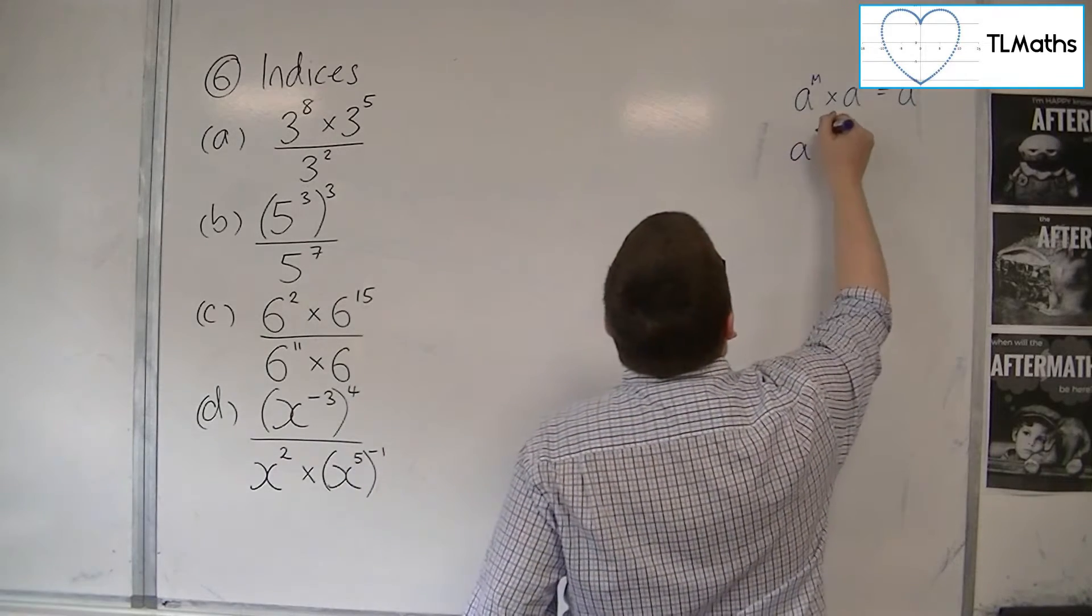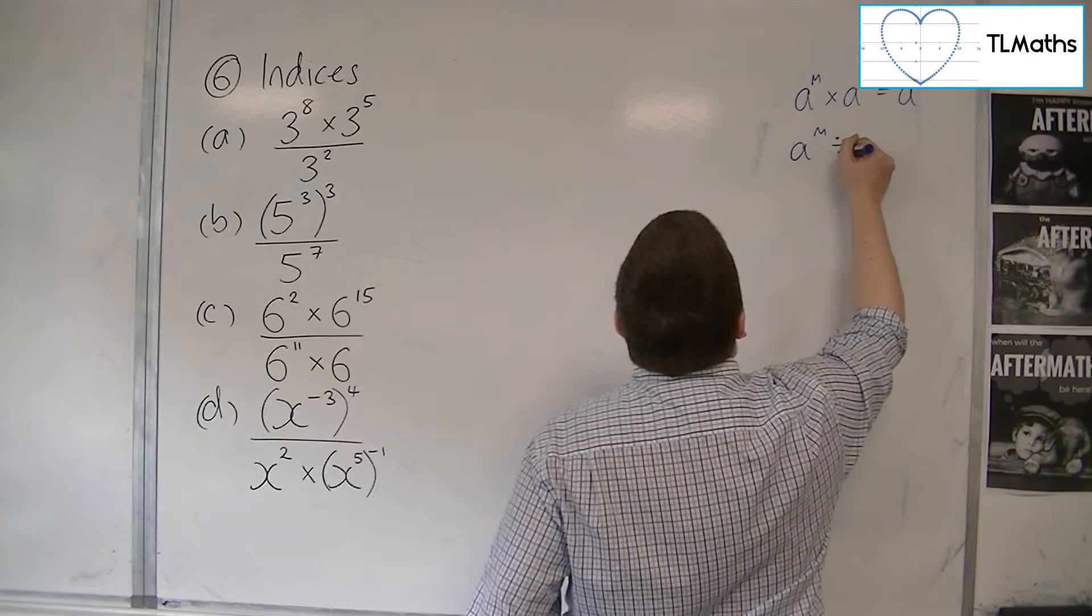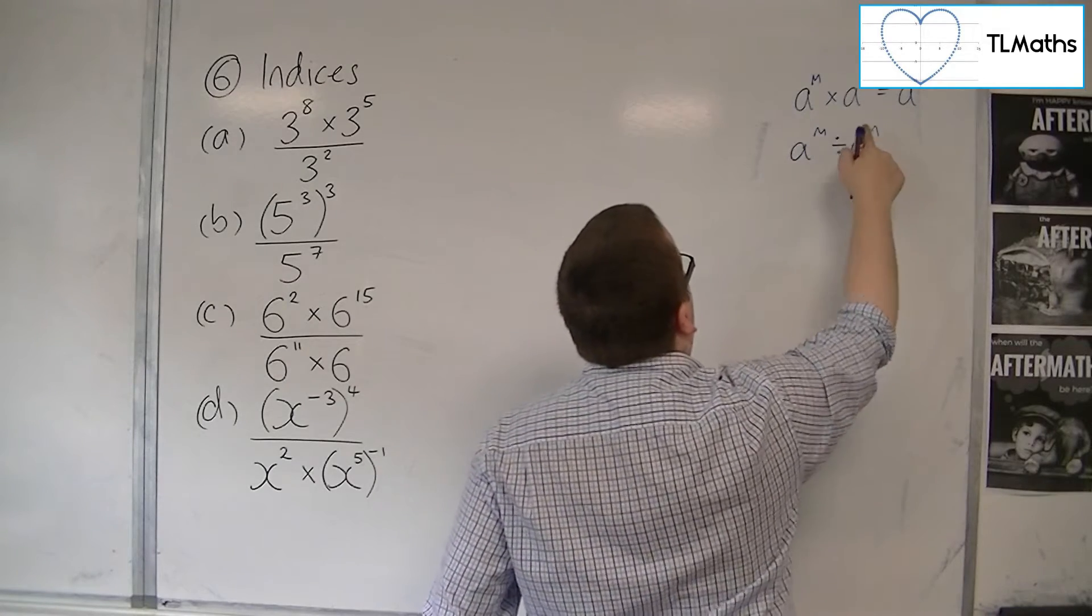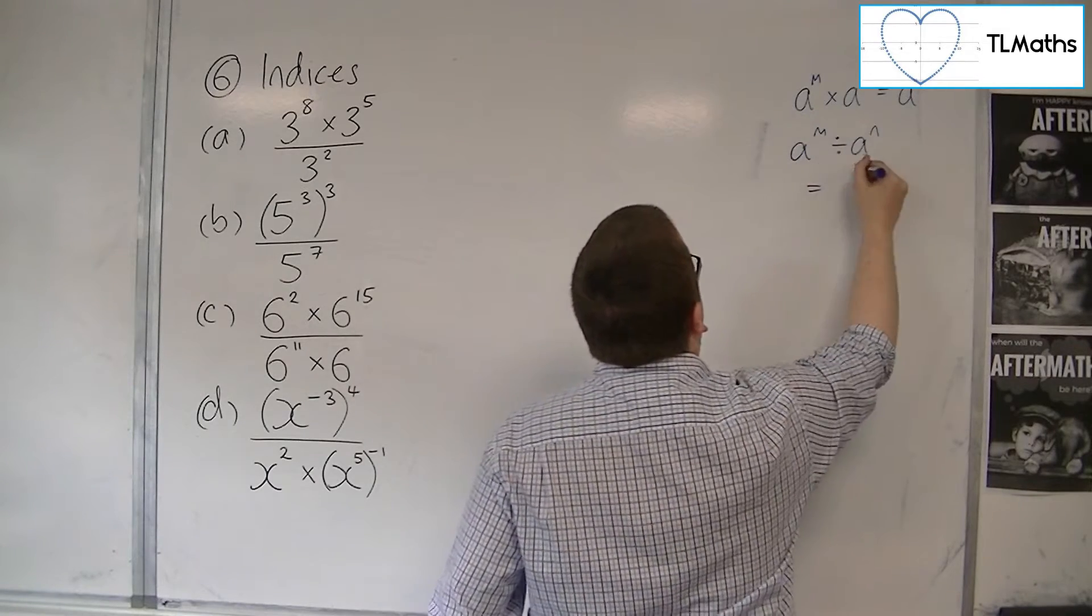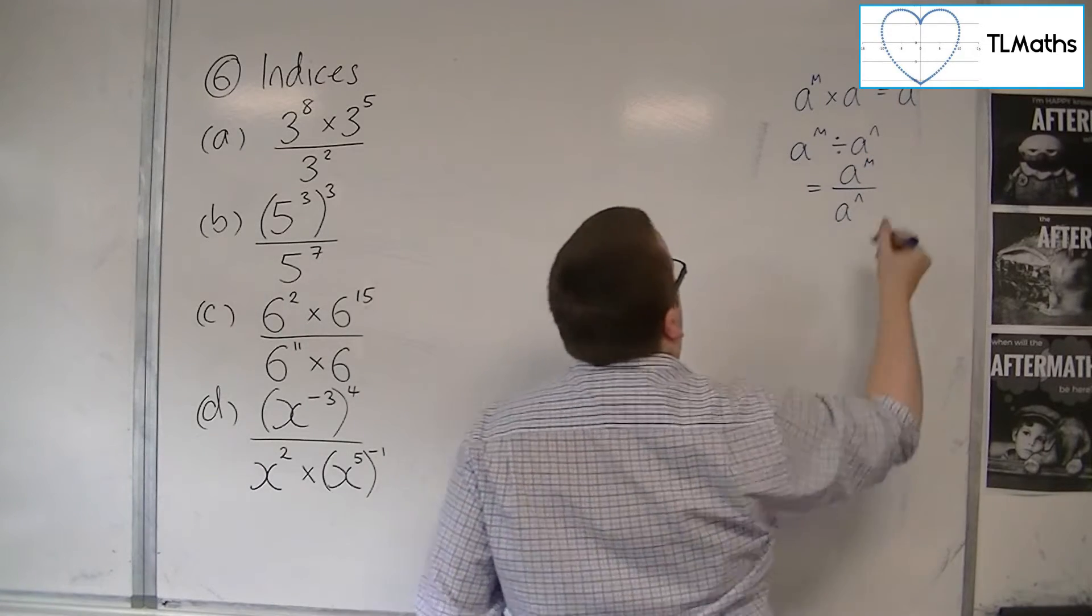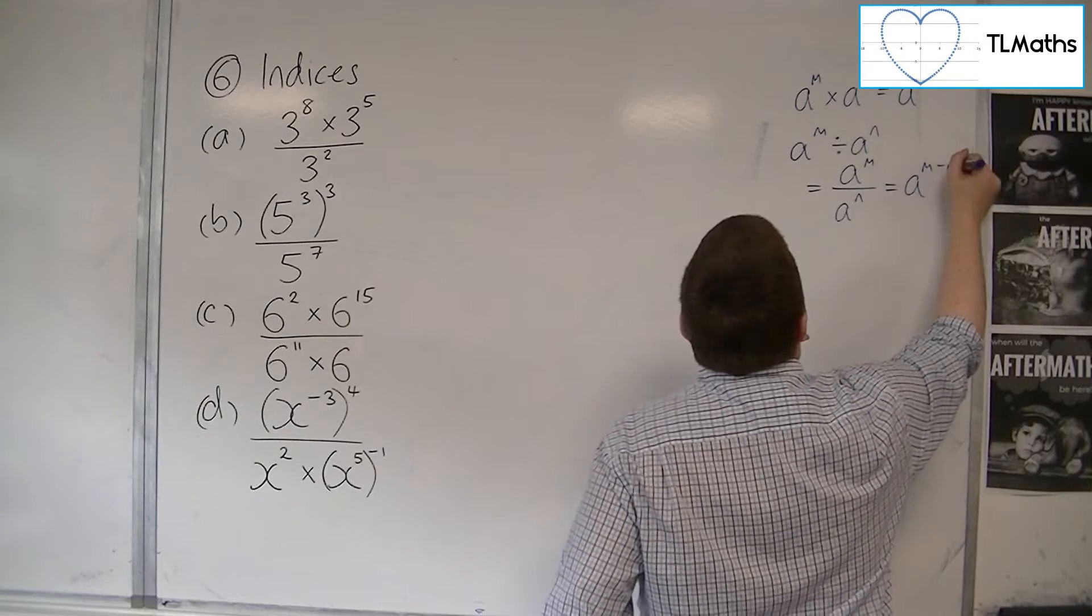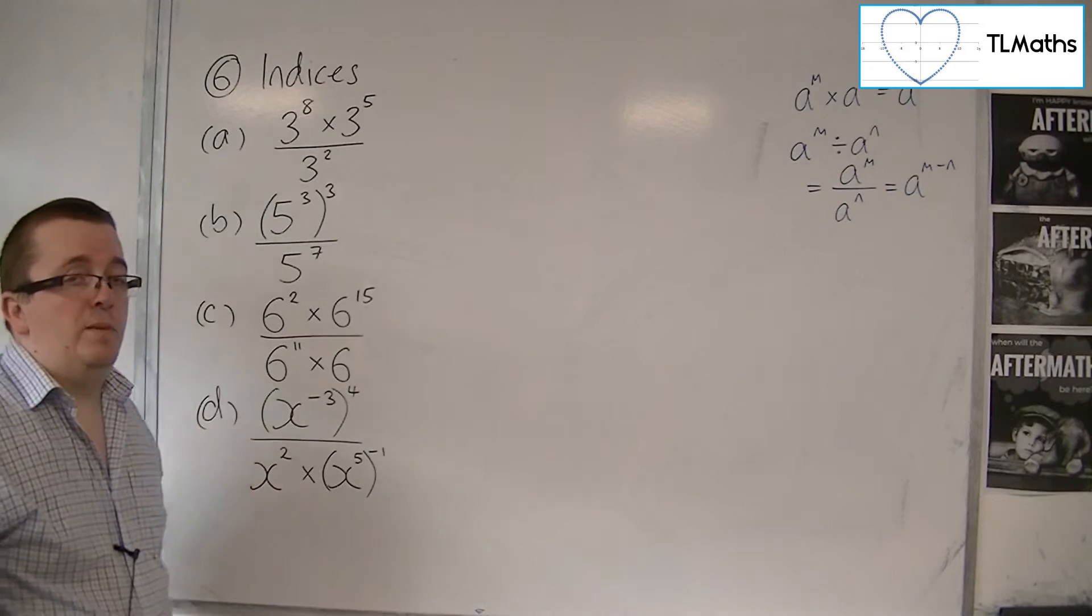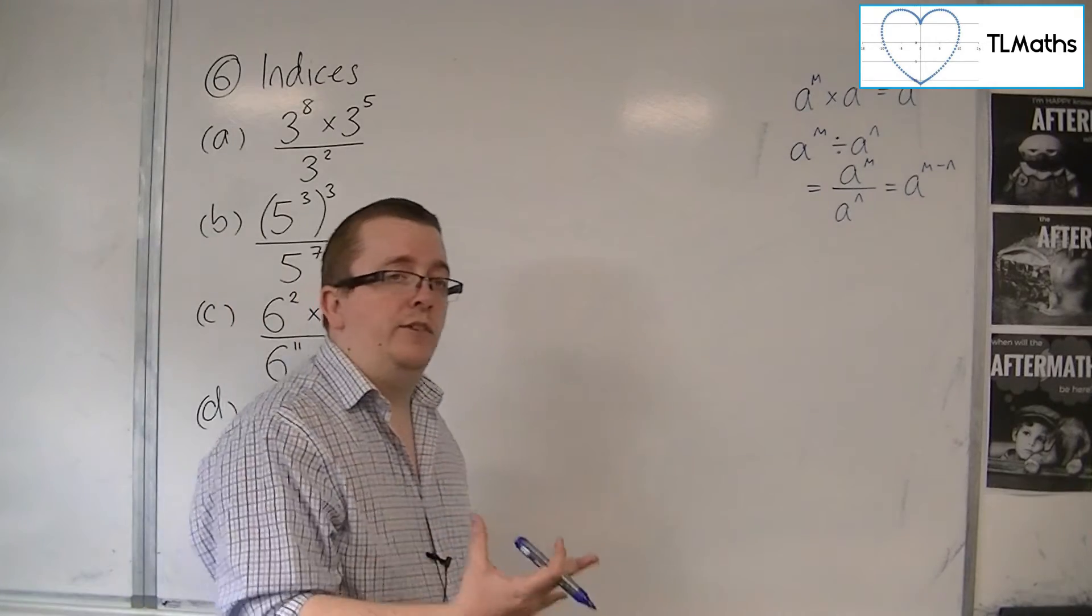If you divide, you can represent division either as a^m divided by a^n or, more commonly at this level, as a fraction. Here the indices subtract, so a^m divided by a^n equals a^(m-n).